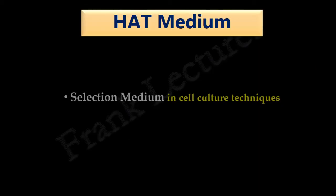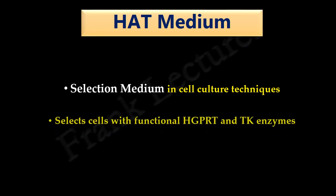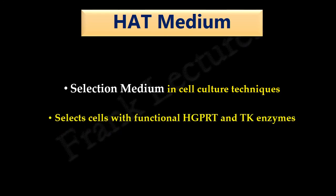Thus, HAT medium functions as an artificial selection medium in cell culture. It selects those cells which have functional HGPRT and TK enzymes.